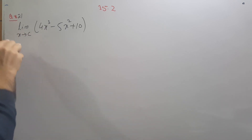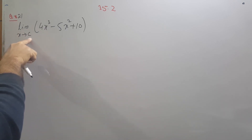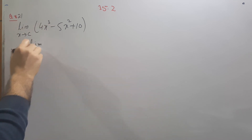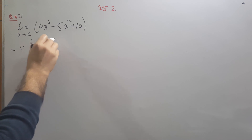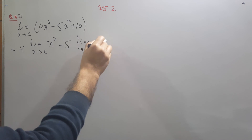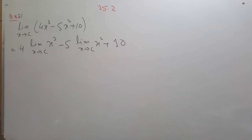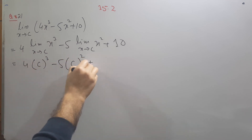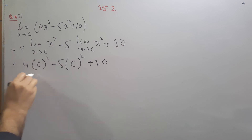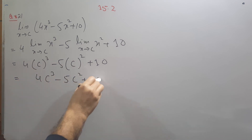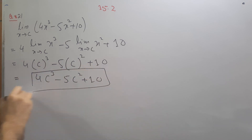The next question involves a limit as x approaches some constant c. We simply apply the limit: the constant terms come out directly and the variable x is replaced by c. This gives 4c cubed minus 5c squared plus 10 as the answer.